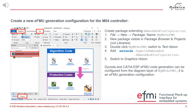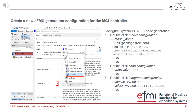First, double-click the model configuration. A dialog opens where you can pick the model for which you want to generate algorithmic code. In this case, it's the controller of M04. You double-click it, click the little tree icon, pick your M04 controller, and press OK.